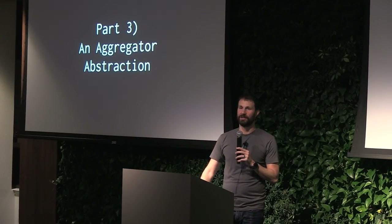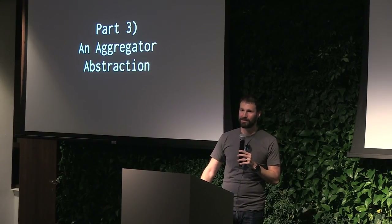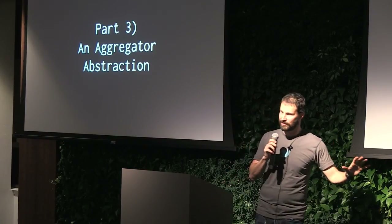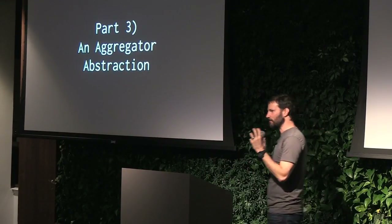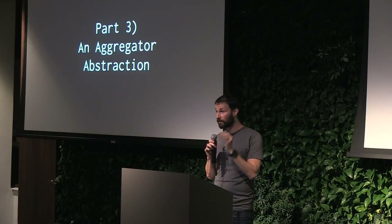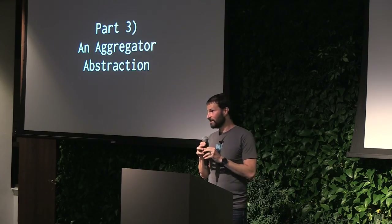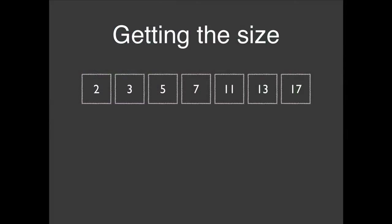Recently we noticed we'd been missing the boat — this is an amazing beautiful abstraction. I want you to walk away with the idea that there's a concept called an aggregator, which will work for you regardless of whether you're using Summingbird, Scalding, Spark, or just local memory. Suppose you're faced with getting the size of a list. In map-reduce we'd map each item over to the number one, then reduce by adding pairs together.